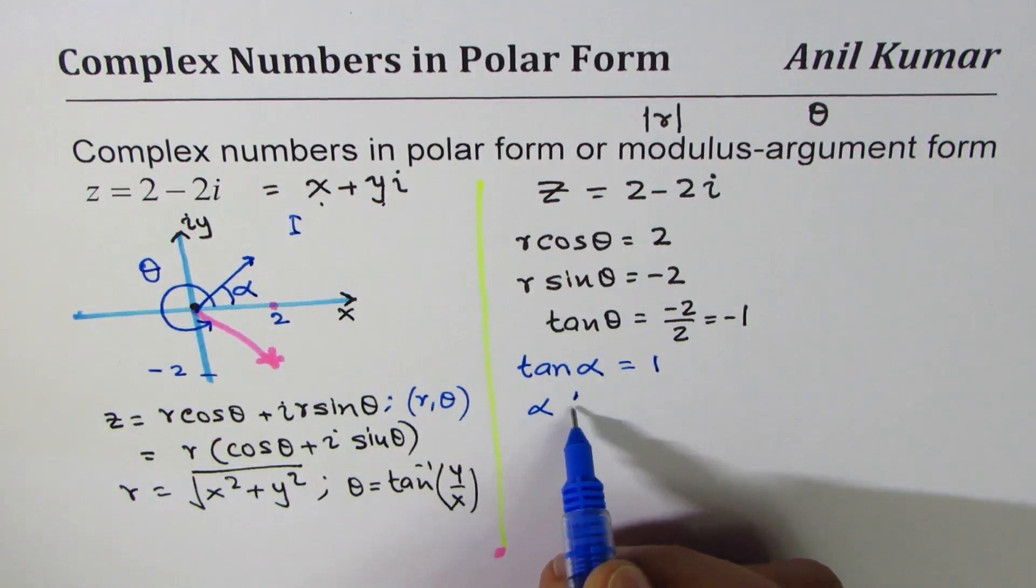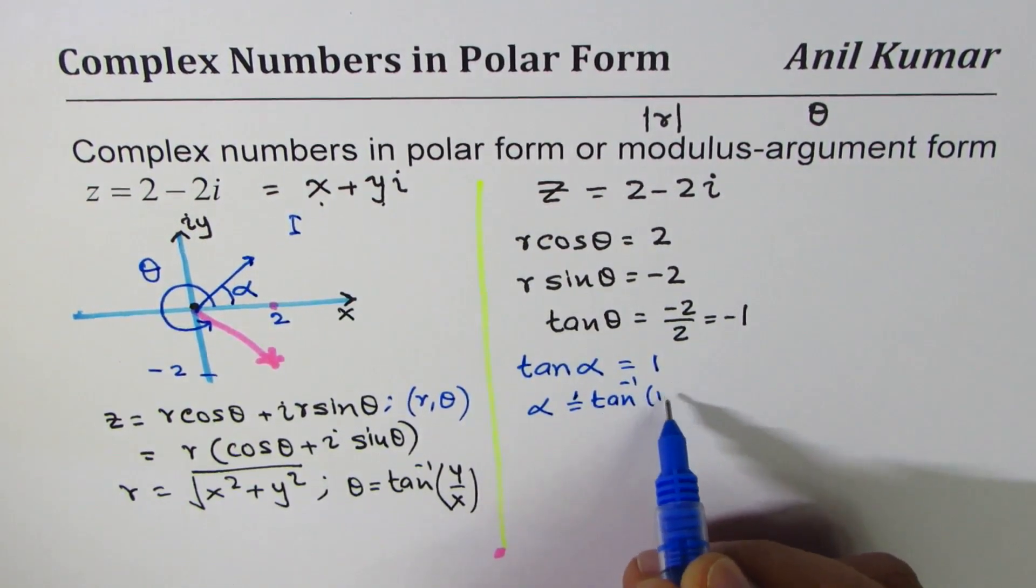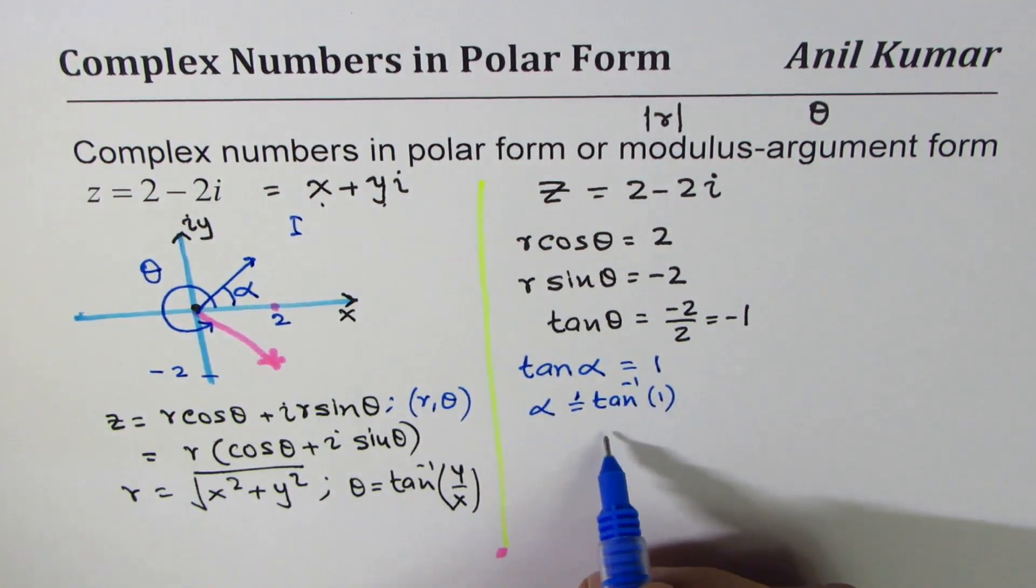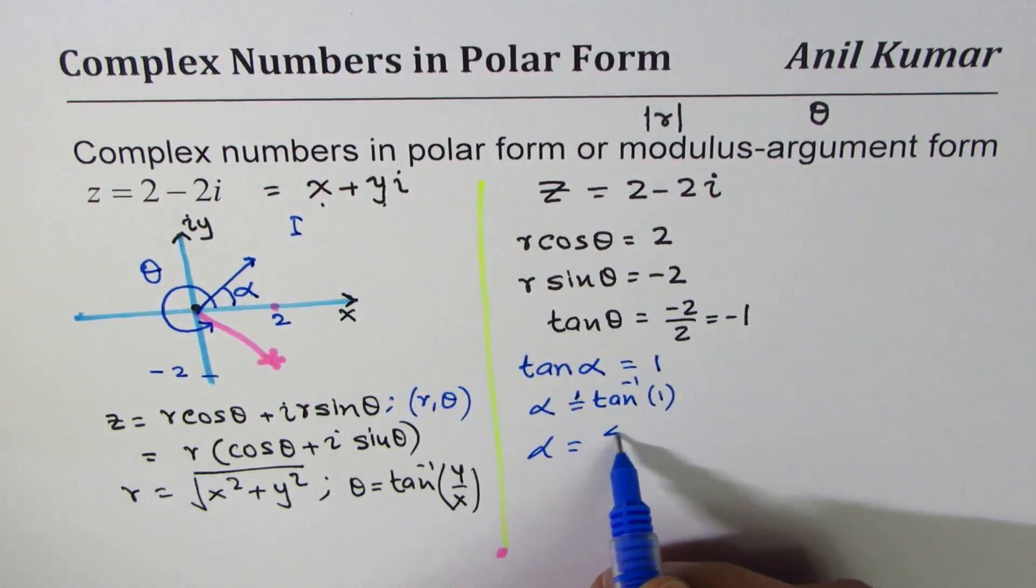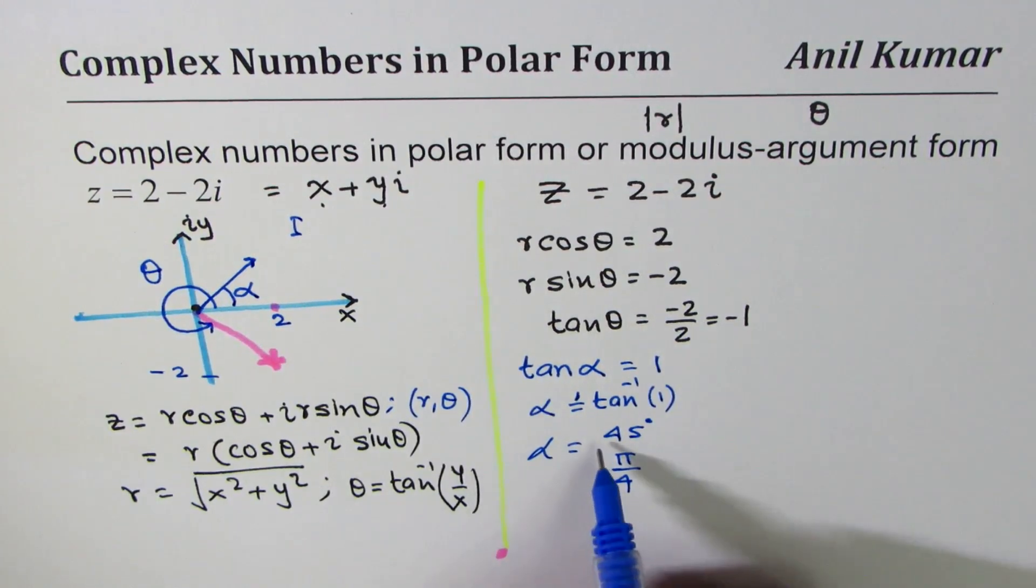So alpha is equals to tan inverse of 1, which you know is, if you're working in degrees then tan is one for 45 degrees. You could use calculator. In radians it is pi by 4. So that is what you could do in either unit you want to work.